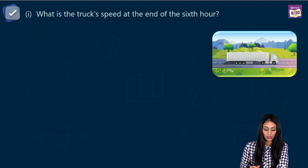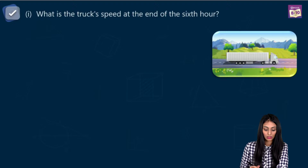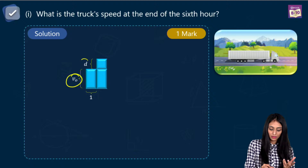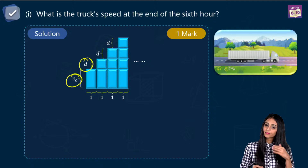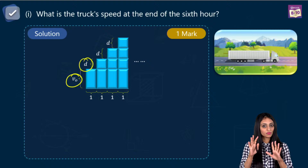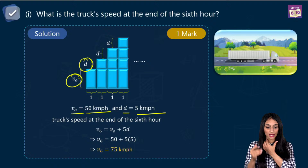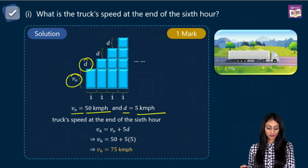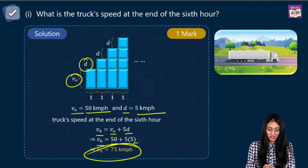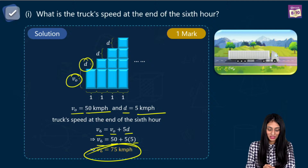First question: what is the truck speed at the end of the sixth hour? The initial speed V-naught is 50 km/h, common difference D is 5 km/h. V6 equals V-naught plus 5 times D, which is 50 plus 5 times 5. That gives 75 kilometers per hour.